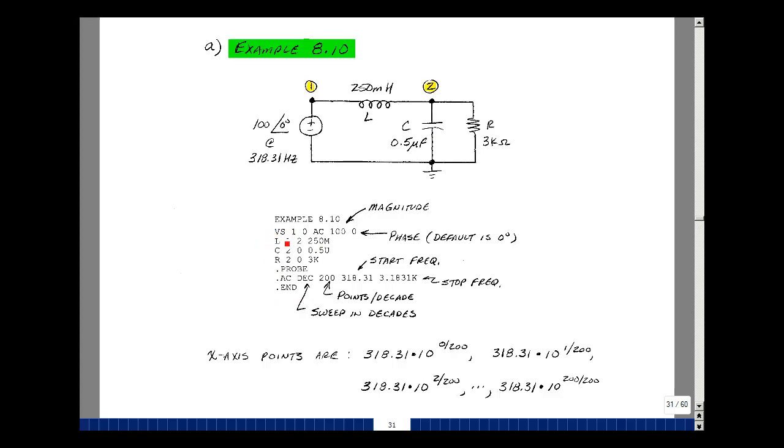What's different here now is for V sub S, we're not going to specify a sine wave, but a phasor. Instead of putting sine wave, we'll put AC, and then the magnitude and angle of the phasor. In this case it was 100 at angle 0. The default here is 0, so if you don't type this, that's what's going to be used.